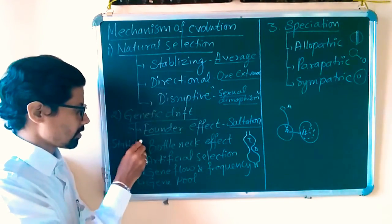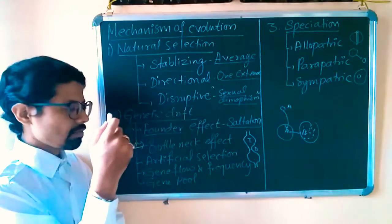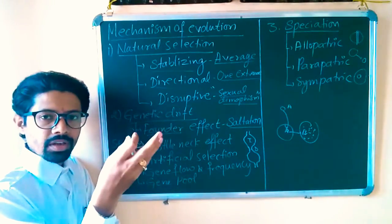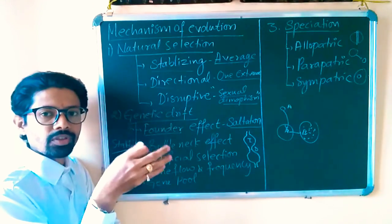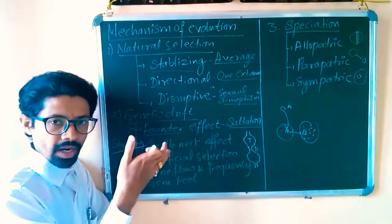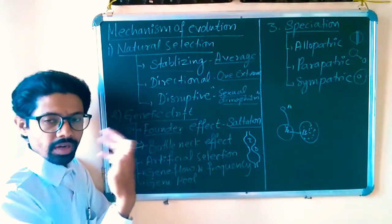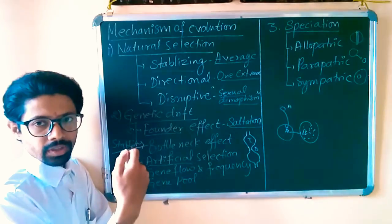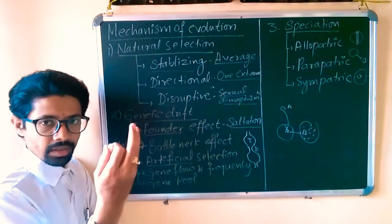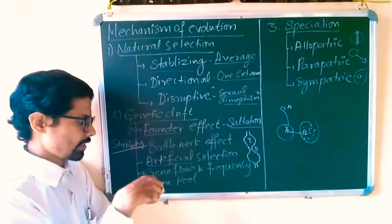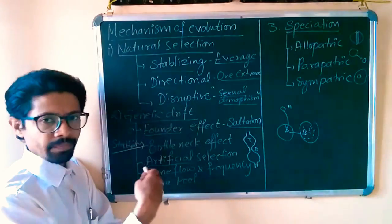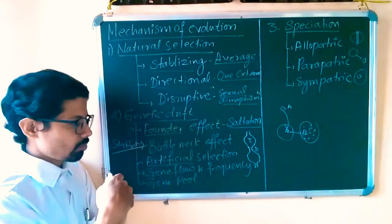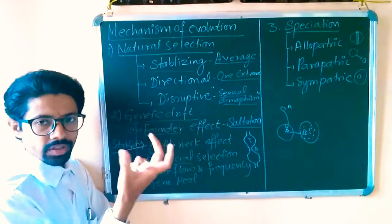Artificial selection is operated by human beings — we select characters that are beneficial for our welfare in animals or plants. The traits beneficial for animal husbandry or agriculture are artificially selected so that we can take profit from them. Gene flow is the flow of genes in a population; gene frequency is the percentage of a gene expressed in a population; and gene pool is the sum total of all gene sets in a population.